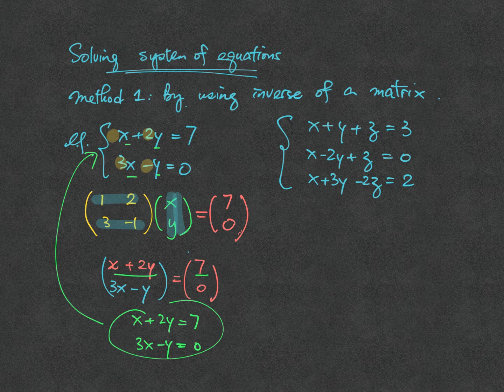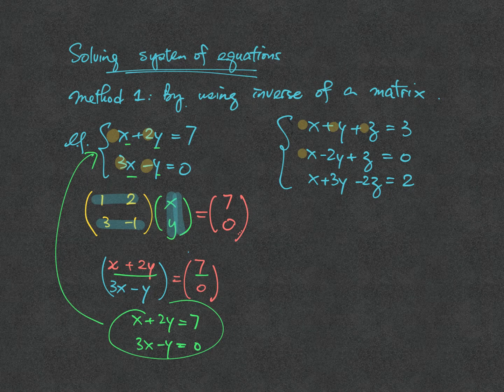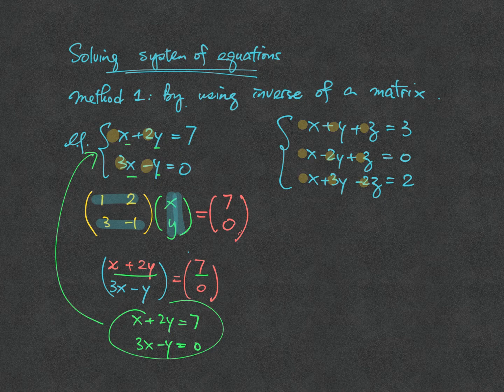Similarly, if we extend the idea into 3 equations, 3 unknowns, we can do the similar job by looking at the coefficients first: 1x, 1y, and 1z; 1x, minus 2y, and 1z; 1x, 3y, and minus 2z.